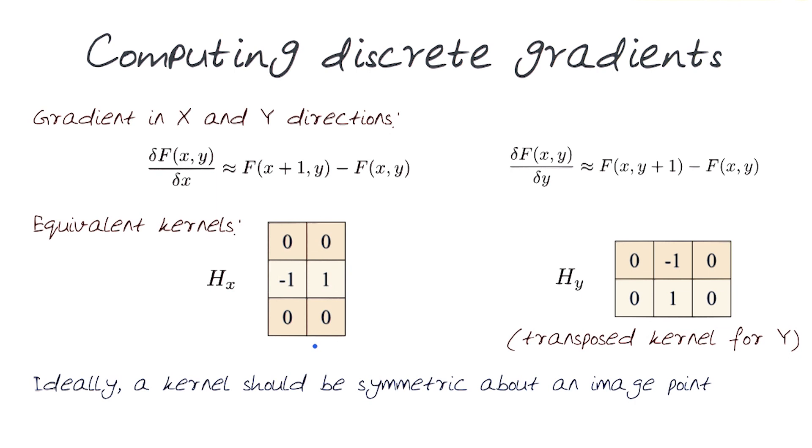Ideally, a kernel should have some symmetry about an image point. By combining these two, you might actually notice there is overall symmetry. So one question remains: where is the middle point of these kernels?